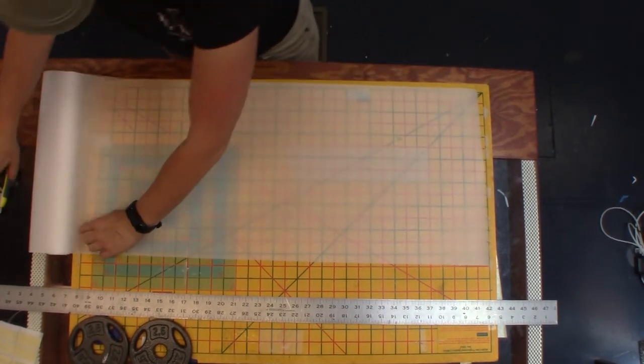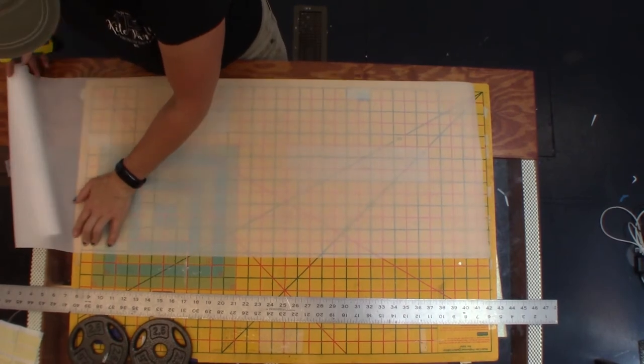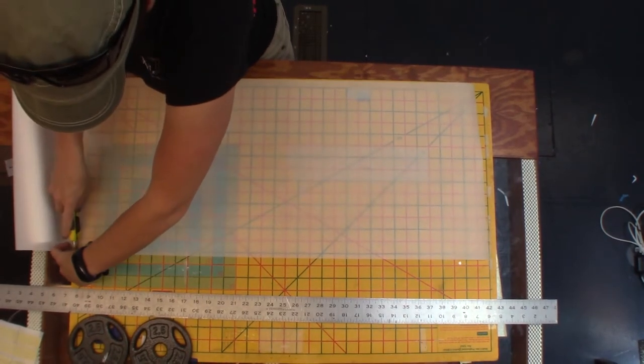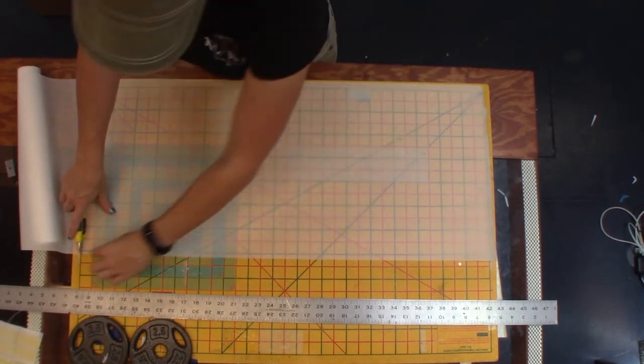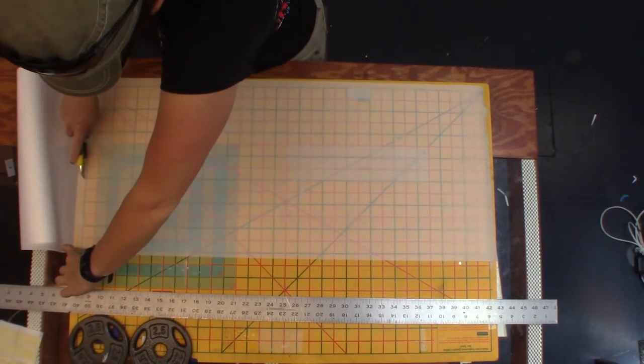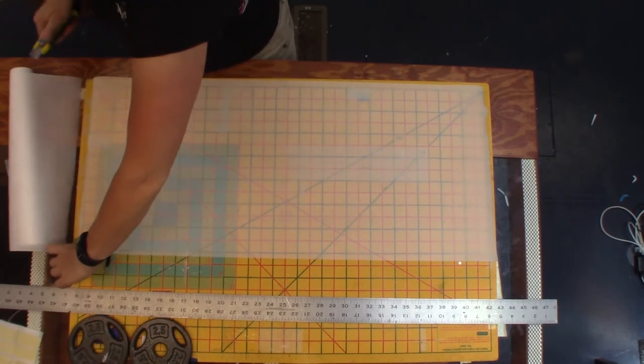Unroll your parchment paper on a cutting mat and cut slightly larger than the amount you need. The yellow mat in this video is 34 inches wide and I cut a piece of parchment paper about 35 inches long.